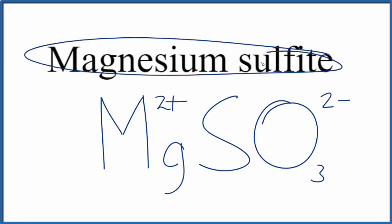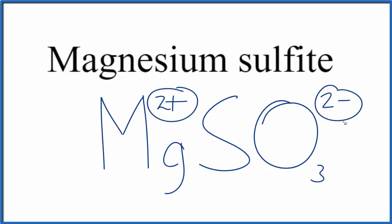In this compound here, it's neutral, it doesn't have the word ion after it. So the charges, they need to add up to zero, give us a net charge of zero. 2 plus, 2 minus, that adds up to zero.